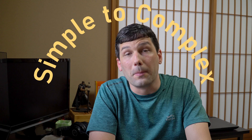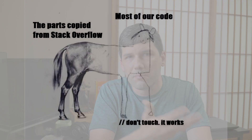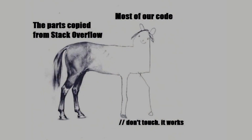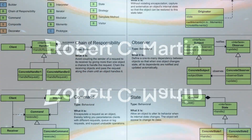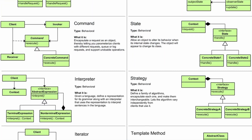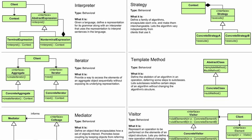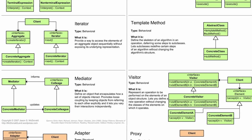Hi everyone, and welcome to the second installment in what I call my simple to complex series. The idea is that I want to explore a subject in three different levels of complexity. And this week I want to explore game programming — but programming in general. Why do we call some code clean? Or why do we say there's a good solution and a bad solution? Why do we talk about software design patterns and all that?